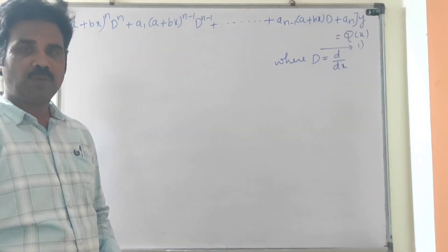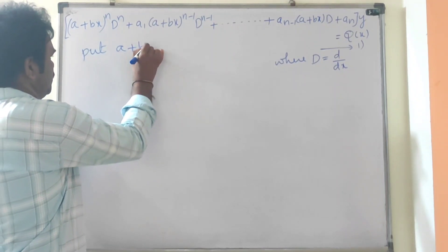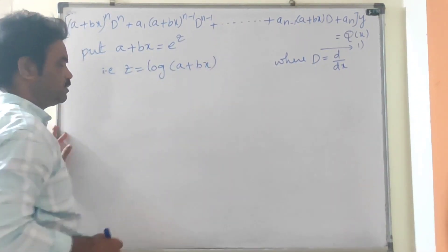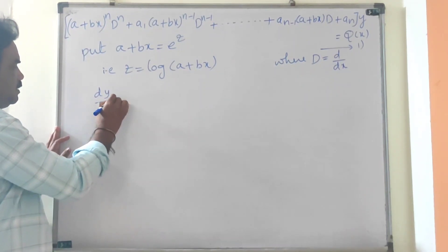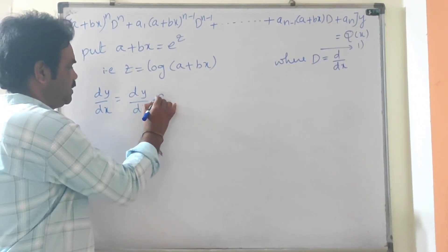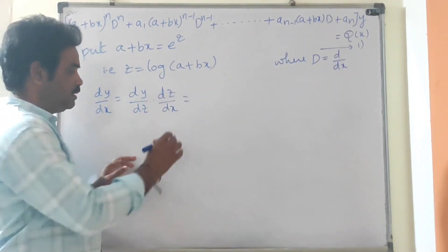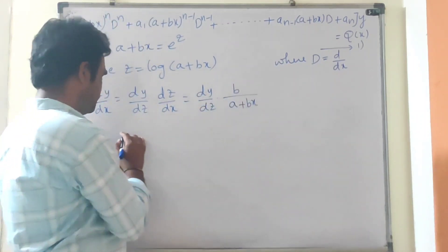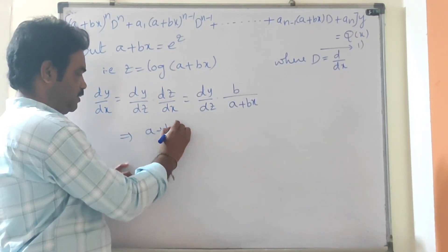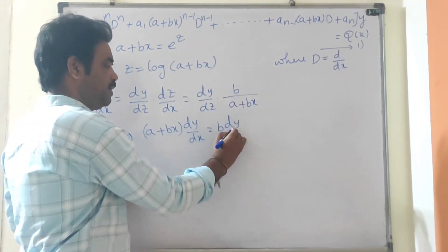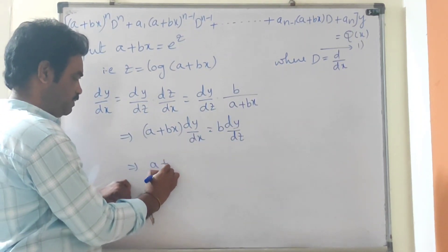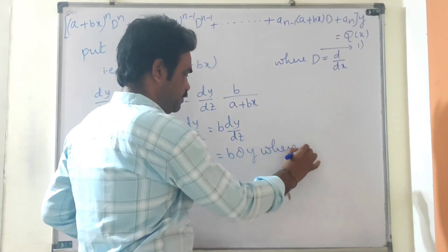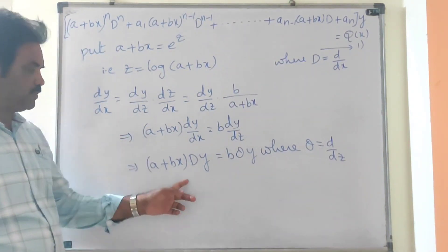To solve Legendre's linear equation, put (a + bx) = e^z, that is z = log(a + bx). Now dy/dx can be written as dy/dz · dz/dx. Since z = log(a + bx), its derivative is b/(a + bx). From this we can write (a + bx) · dy/dx = b · dy/dz. That is, (a + bx) · D = b · θ, where θ is the differential operator d/dz.